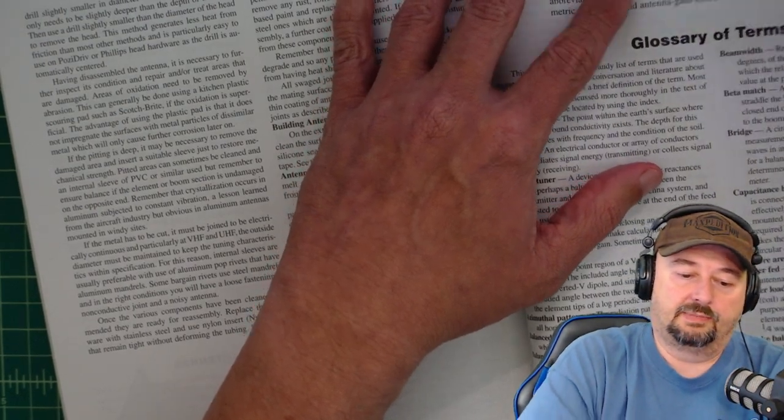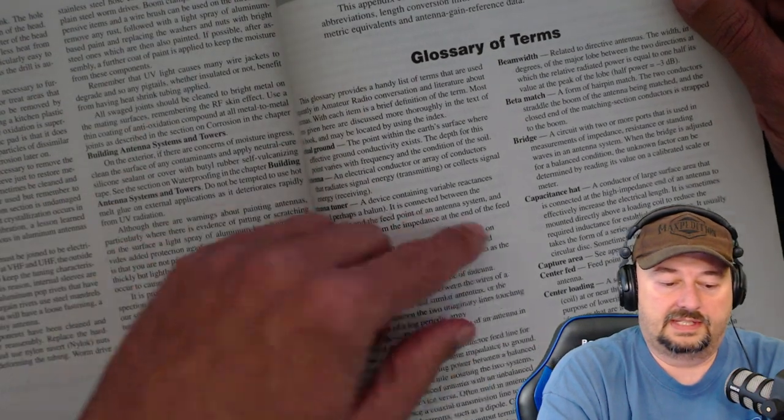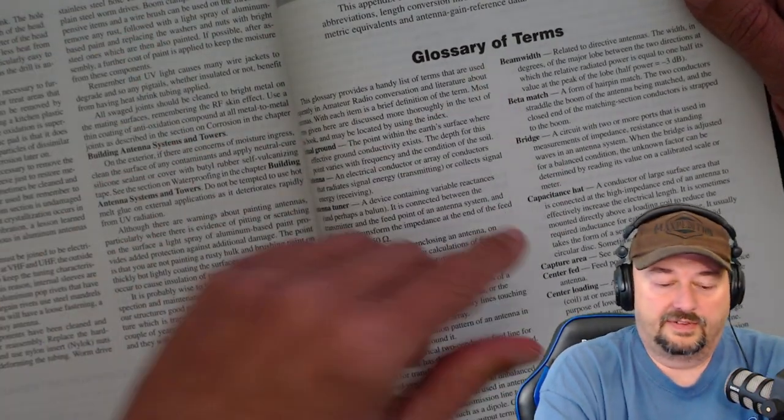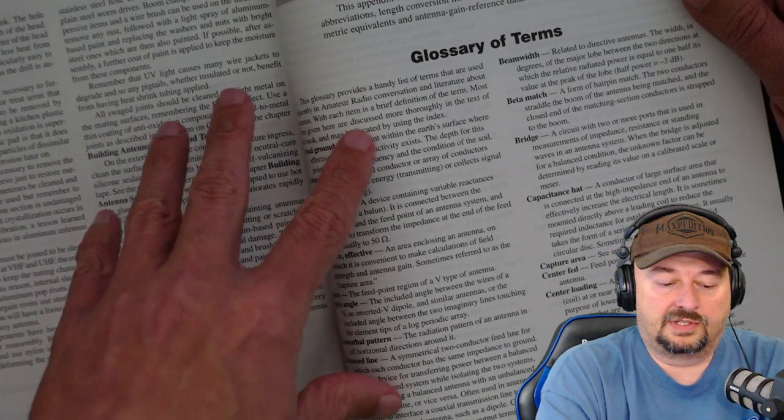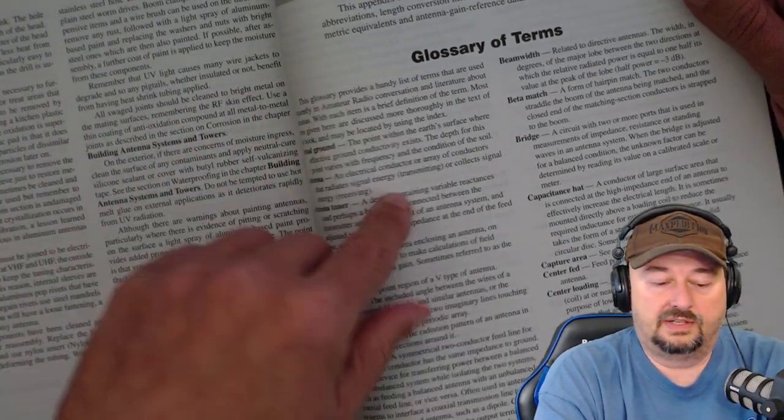And like the other book that we looked at, it has a pretty comprehensive glossary of terms because you're going to come across things like here's a capacitance hat. I don't know if you've ever heard of that or not, but you may hear a term that's unfamiliar to you or somebody might be using it in conversation and you can come here and look that up.